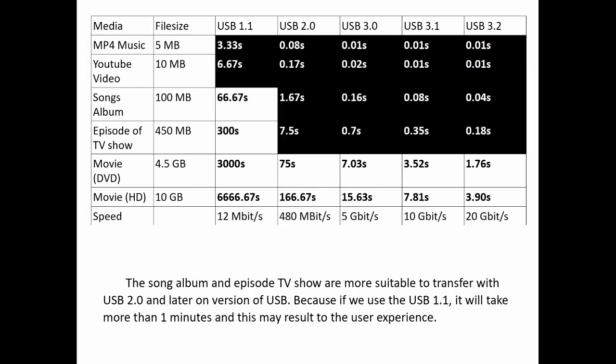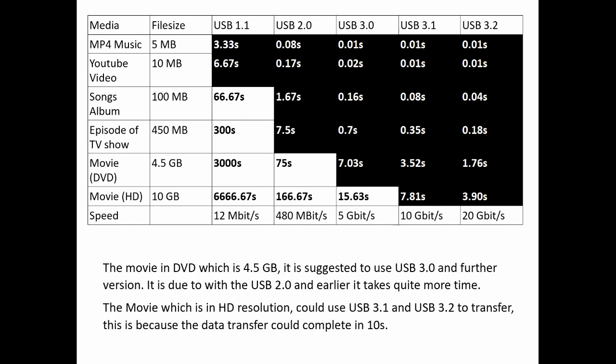Song albums and TV show episodes are most suitable to transfer with USB 2.0 and later versions, because using USB 1.1 would take more than 1 minute, negatively affecting user experience. For a movie in DVD format, which is about 4.5GB, it is suggested to use USB 3.0 and further versions, since USB 2.0 and earlier take quite more time. HD distribution movies could use USB 3.1 and USB 3.2 to transfer, because the data transfer can complete within 10 seconds.